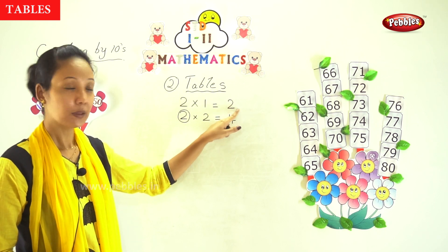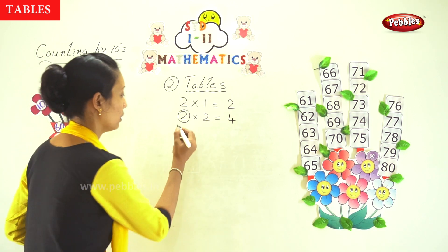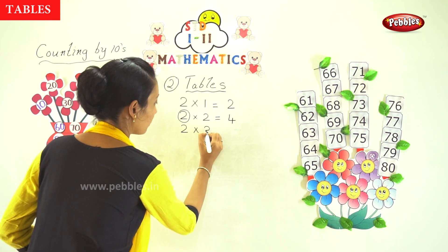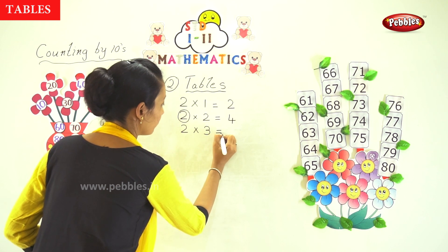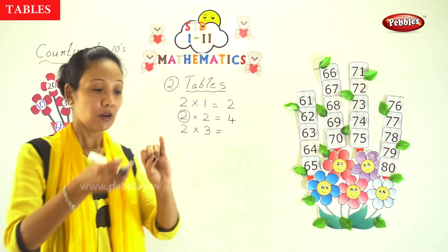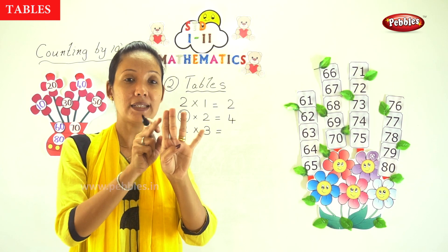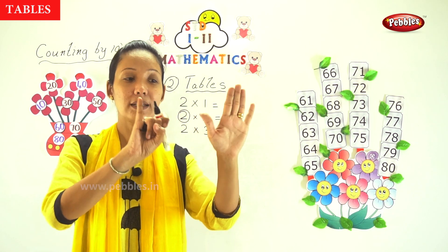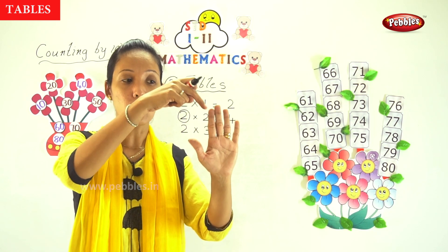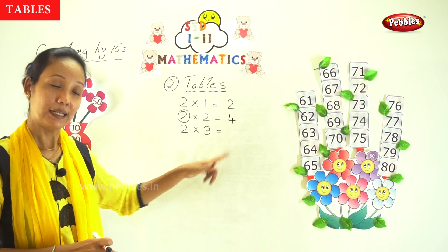Next you have 2 into 3. When you multiply 2, three times — the first 2 is one set, the next 2 is the second set, and this 2 is the third set. How many numbers do you have? 1, 2, 3, 4, 5, and 6. So 2 into 3 is 6.